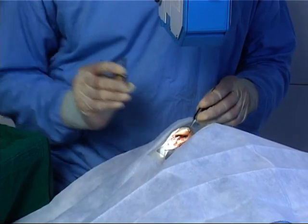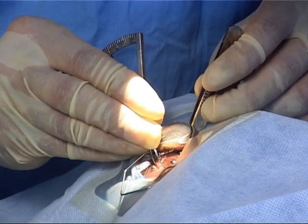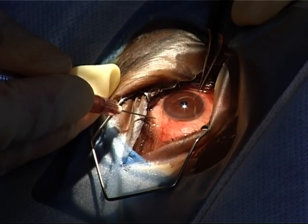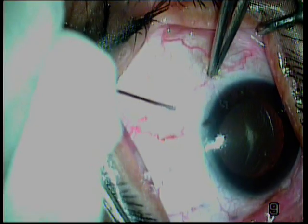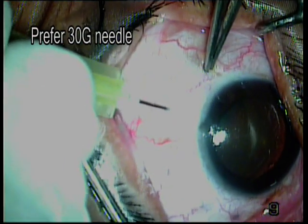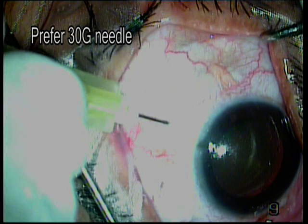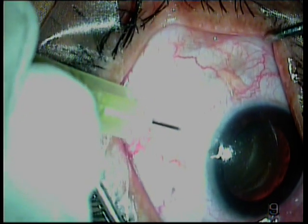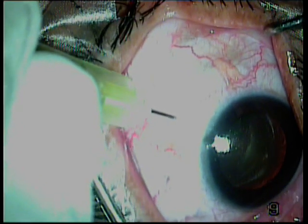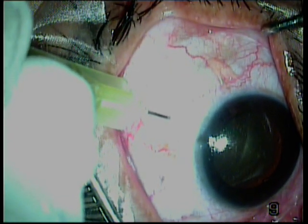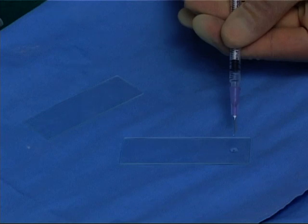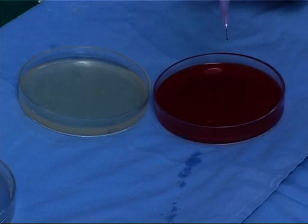Mark 3.5 mm posterior to the limbus in the pseudophakic eye using calipers. Fix the globe with fixation forceps and insert a 26, 27, or 30 gauge needle with the bevel facing upwards and directed toward the mid-vitreous, with the tip of the needle being directly visualized. Take a vitreous tap before injecting the drug, placing it on two different slides and the rest onto the agar plate for incubation.